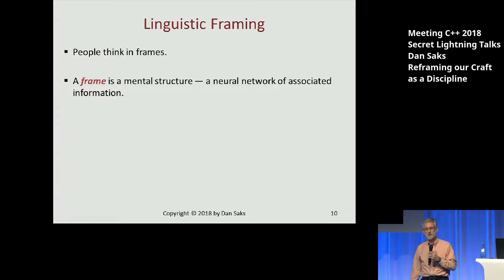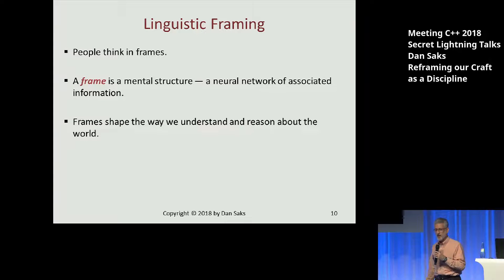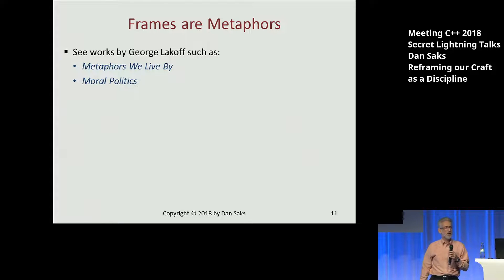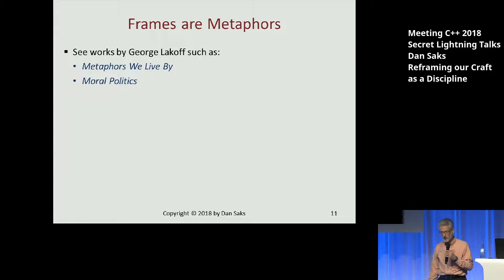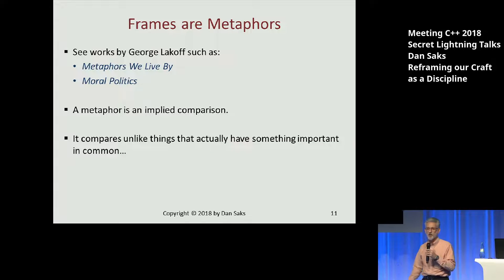I think we should turn to linguistic framing. In cognitive science, there's a branch known as frame theory. A frame is a mental structure — basically a neural network, an association of information; it's how your mind works. Frames shape the way we understand and reason about the world. Frames are mostly metaphors. To do my scholarly due diligence, I can give you references you can check. George Lakoff is a principal resource for this stuff. A metaphor is an implied comparison — it draws a comparison between things which at first seem unrelated but actually have an underlying common property.